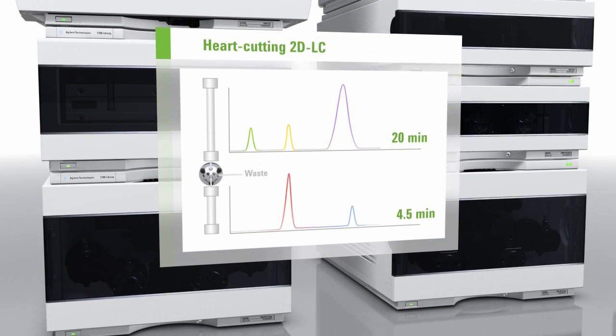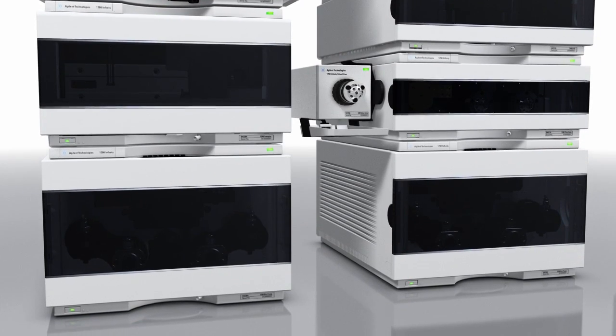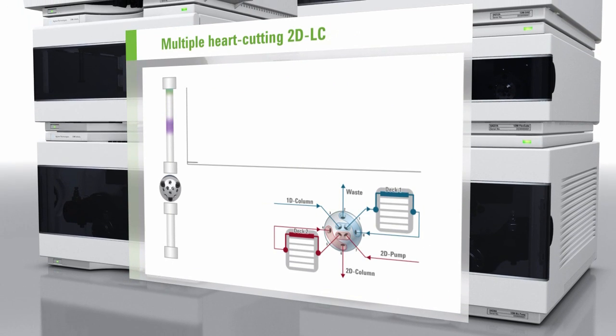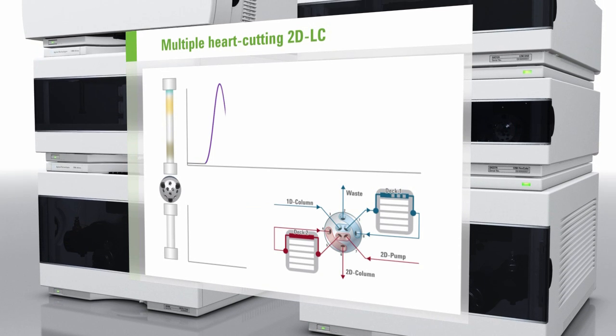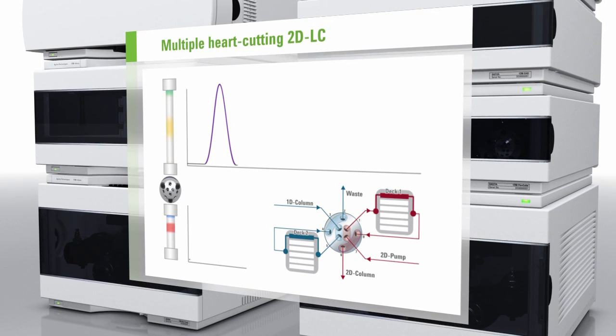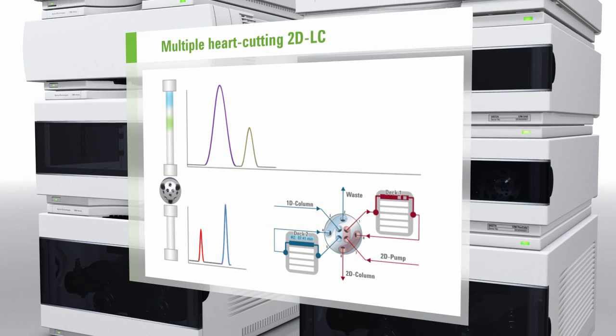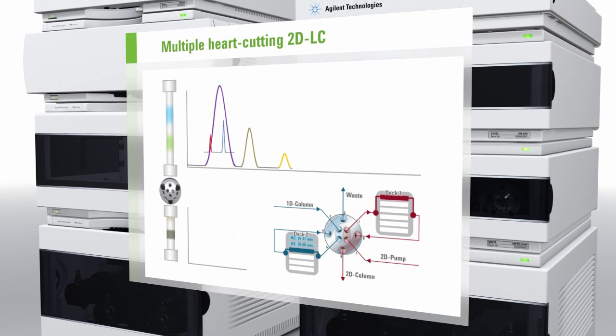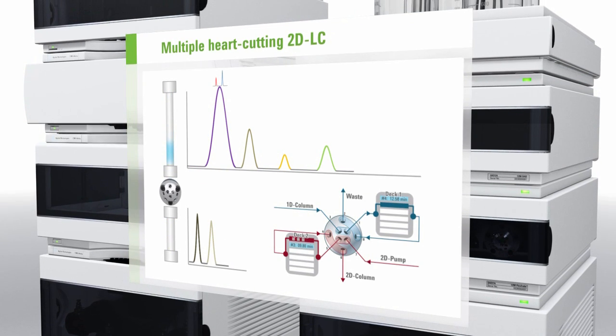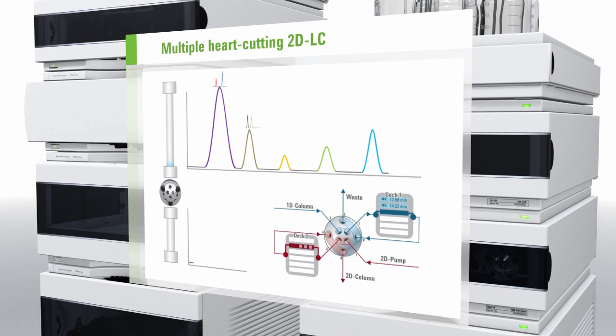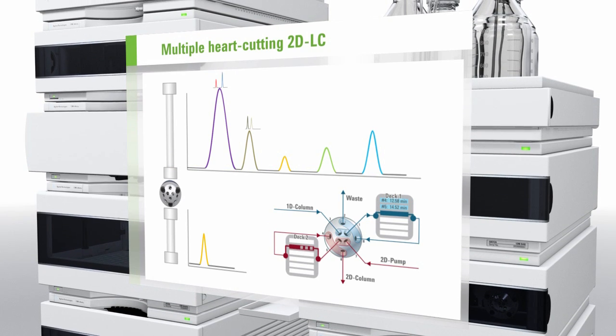The run time of the second dimension analysis is usually much longer than the collection time from the first dimension. However, a simple heart cut approach might miss close eluting peaks. Now, the Agilent 1290 Infinity 2D LC solution with multiple heart cutting helps you solve this timing dilemma easily. This new technique stores peaks from the first dimension analysis in loops while the second dimension analysis is still running. As soon as the second dimension analysis finishes, the system works off sequentially the stored peaks from each heart cut.